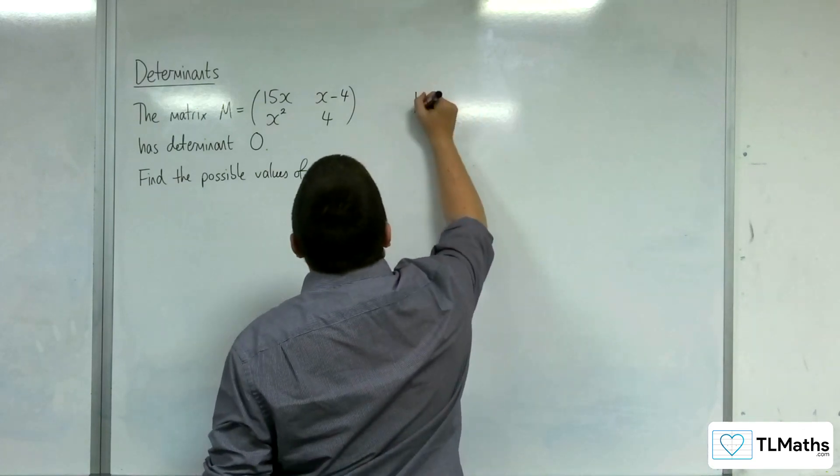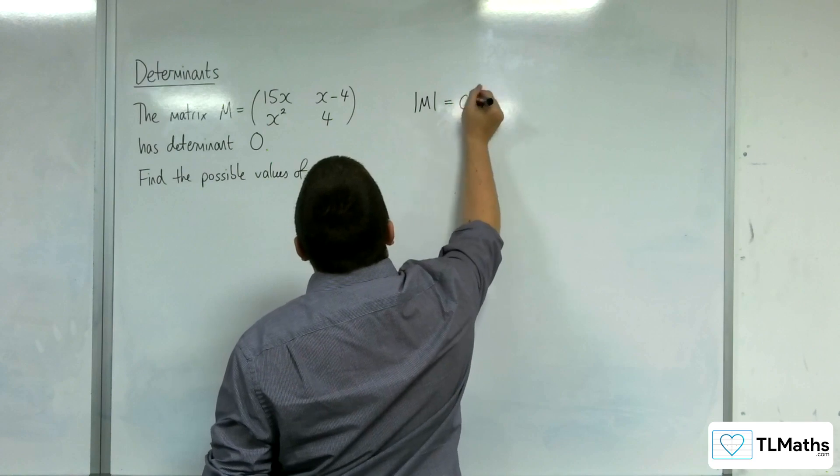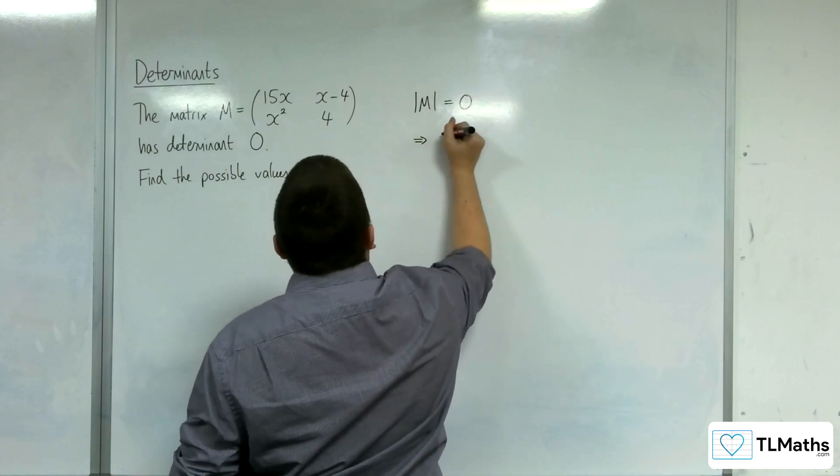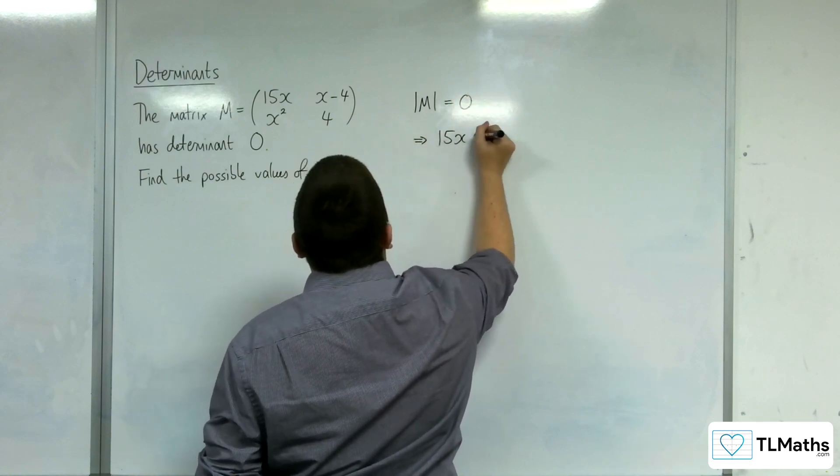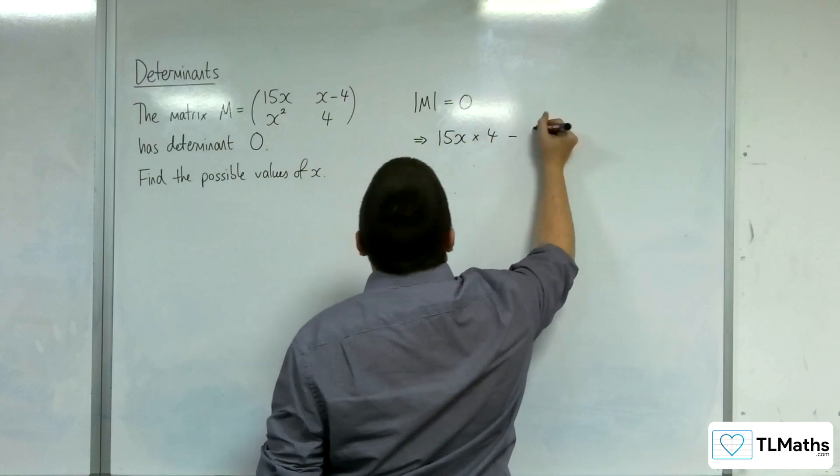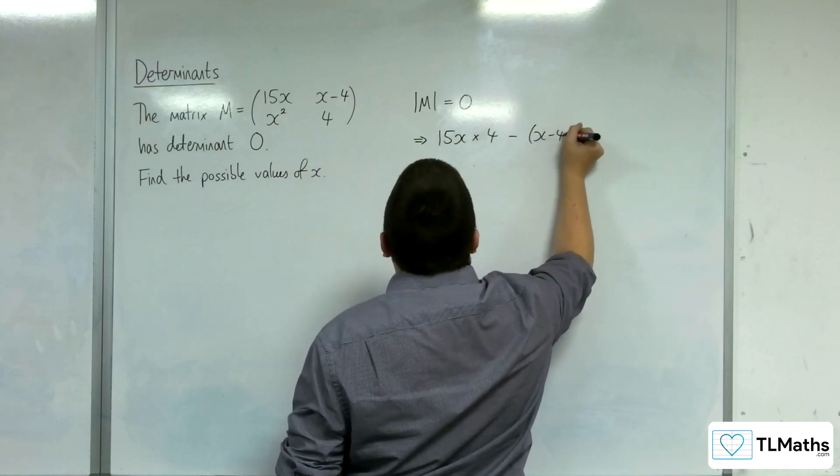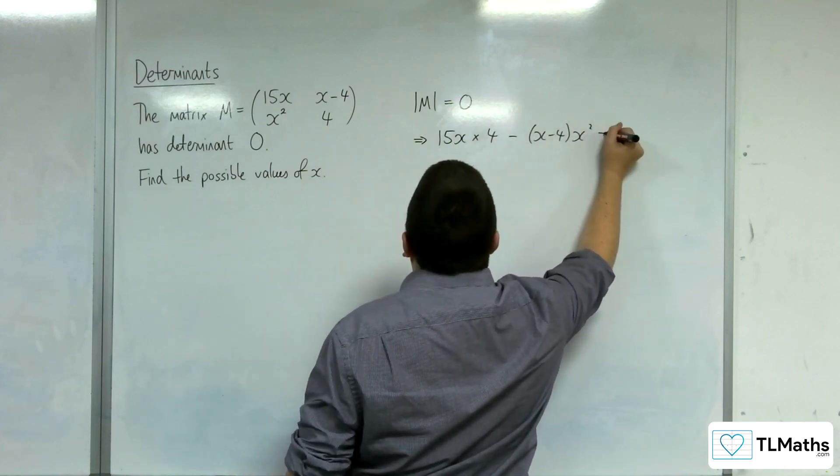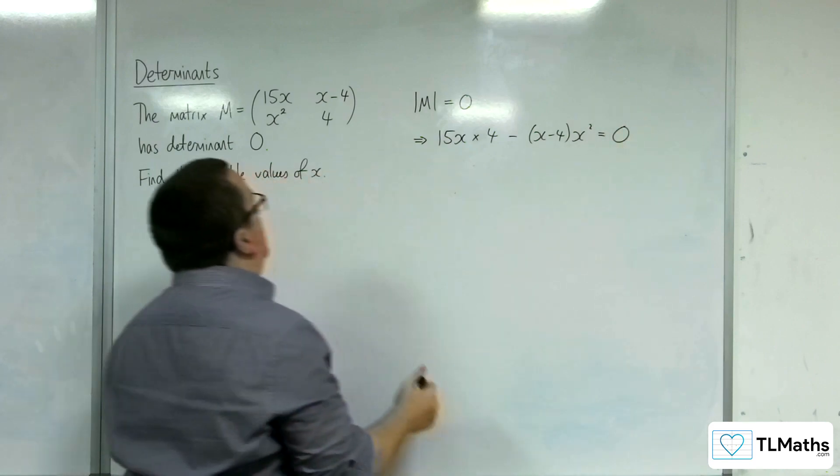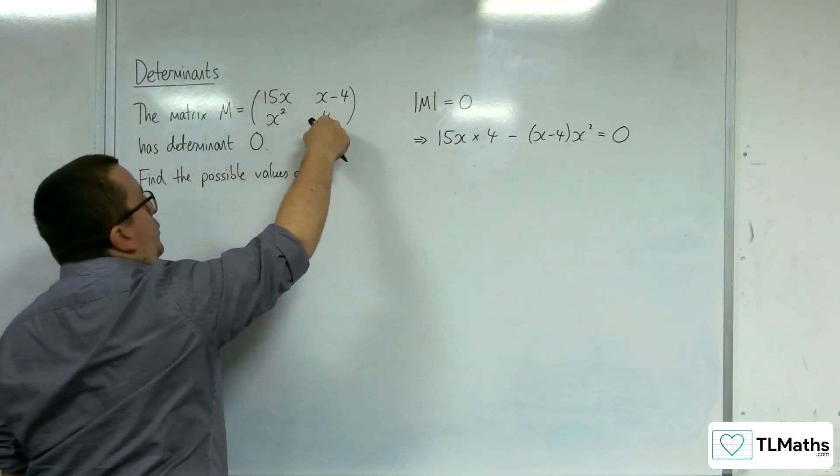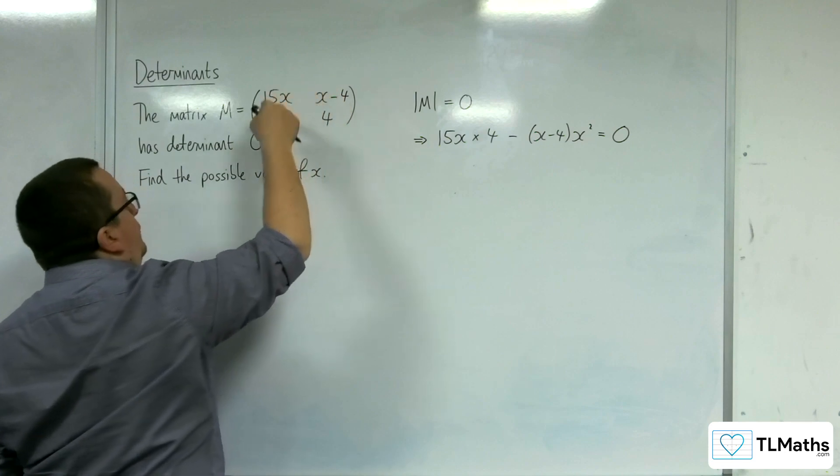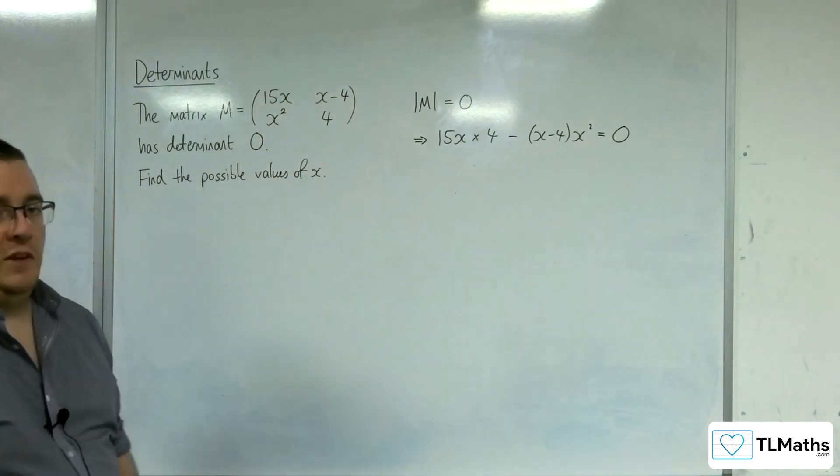If the determinant of M is 0, then that means that 15x times 4 take away x minus 4 times x squared must be equal to 0.